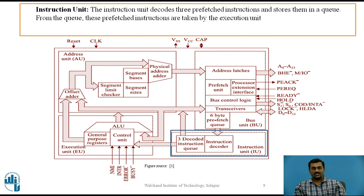The next unit is instruction unit. The instruction unit decodes three prefetched instructions and stores them in a queue. From the queue, these prefetch instructions are taken by the execution unit. As you can see here, there is an instruction decoder which decodes the instructions which are input from this 6-byte prefetch queue. These three decoded instructions are stored in this queue and these decoded instructions are then given to this execution unit.